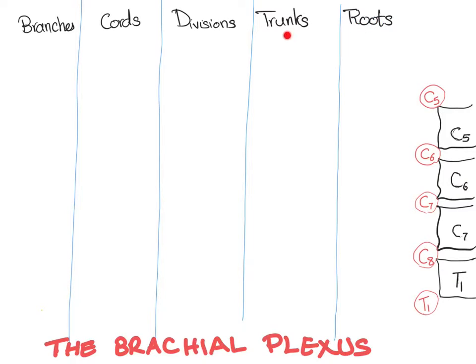After the roots, there are trunks. After that, divisions, and like cords. We can call them cords. So let's start. We will draw something like this, and something like this. Mirror image.